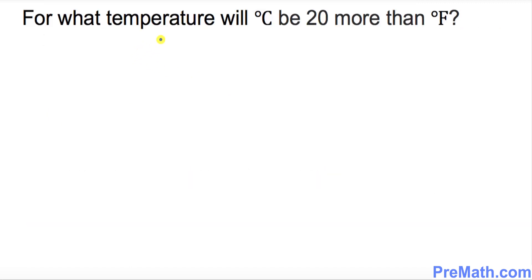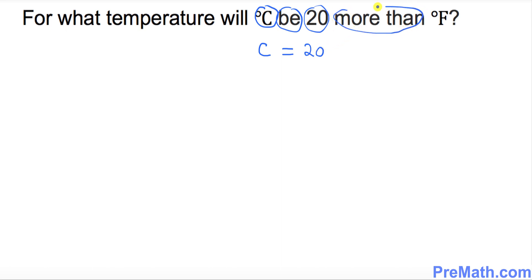Let's get started with the very first problem. It says: for what temperature will degrees Celsius be 20 more than degrees Fahrenheit? Let's convert this word problem into algebraic form. We put down C for degrees Celsius, 'is' always means equal to, and 'more than' means plus. So we get C equals 20 plus F.